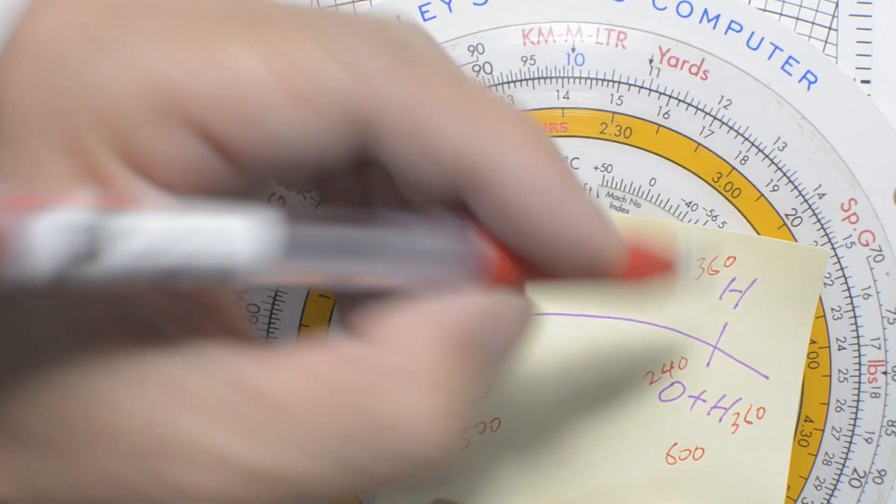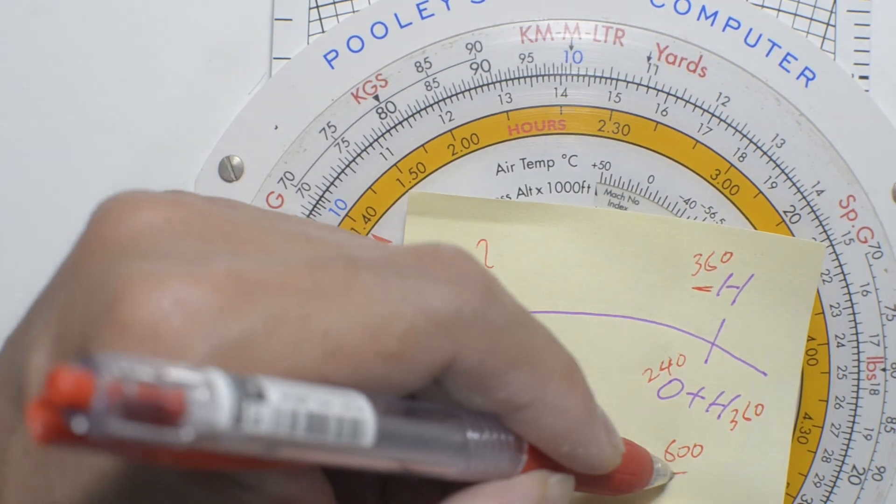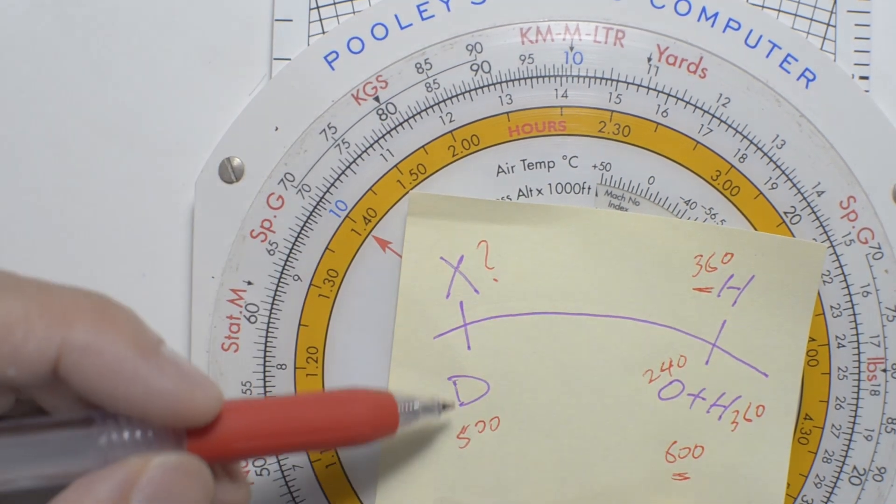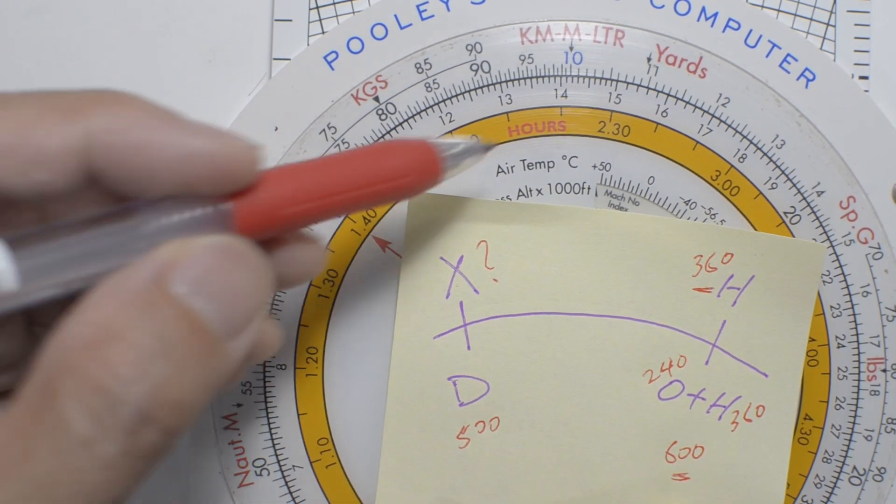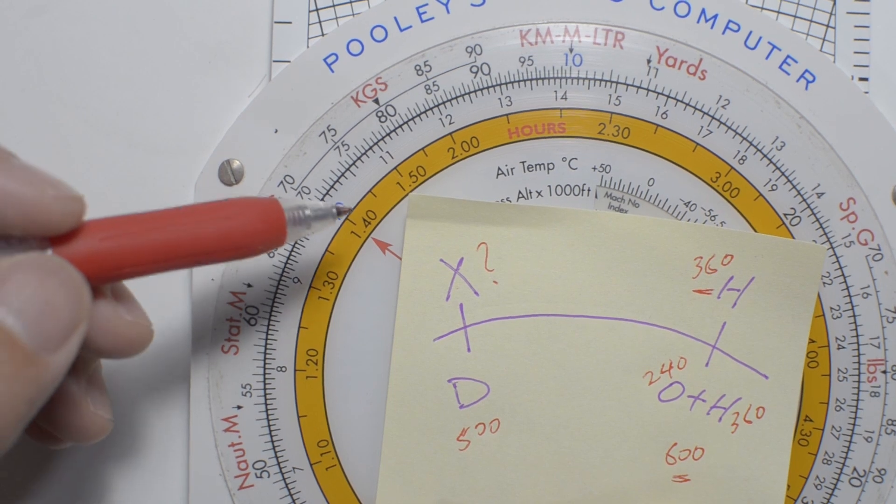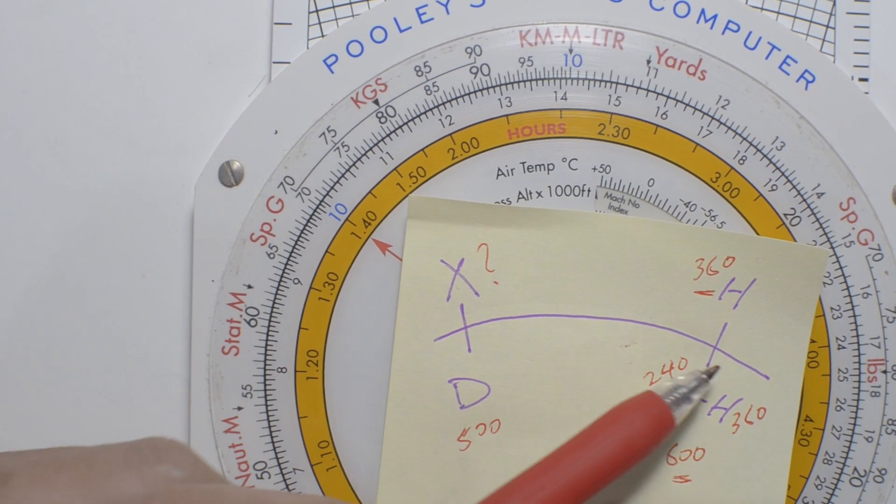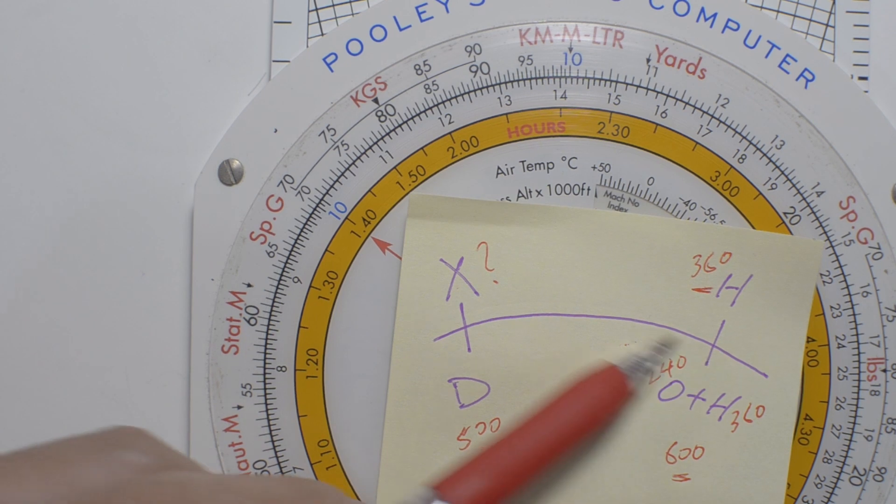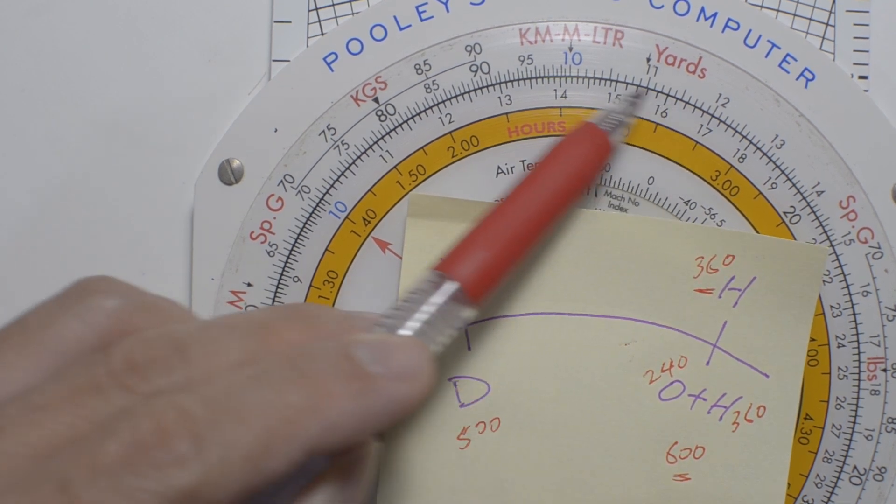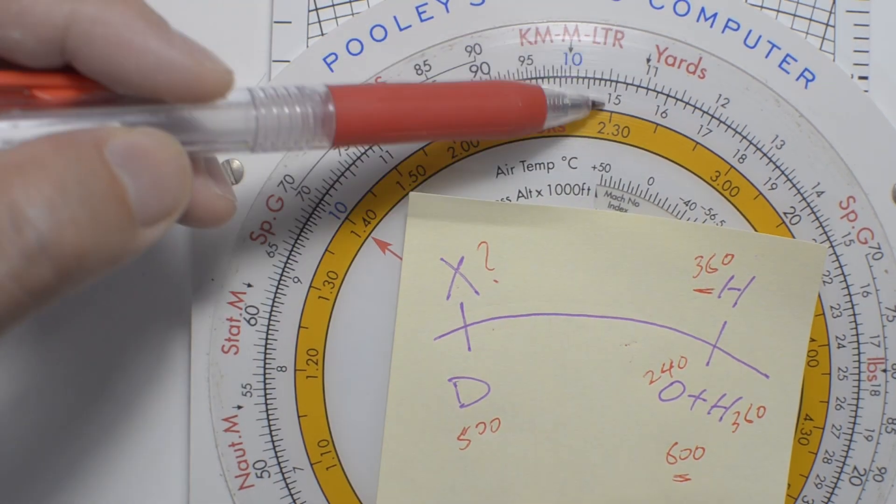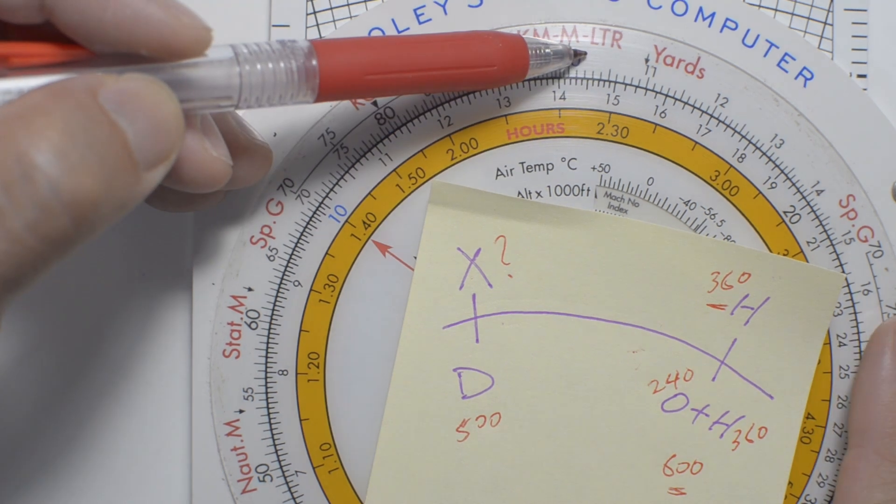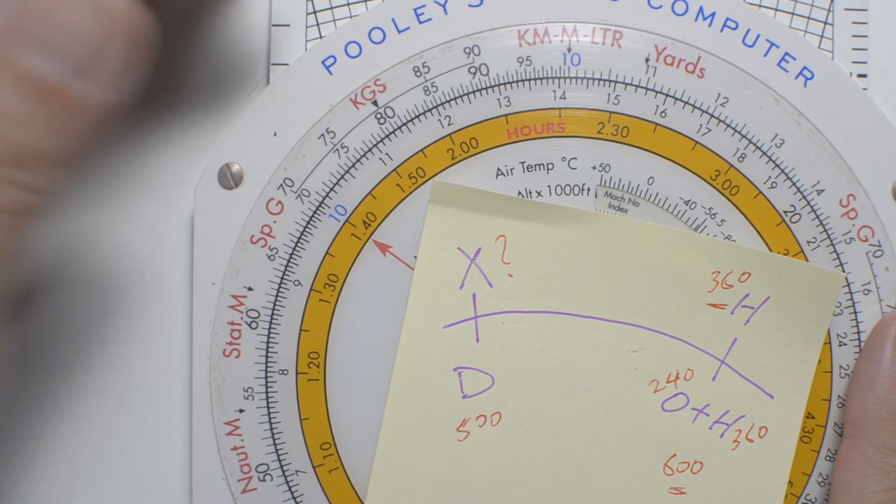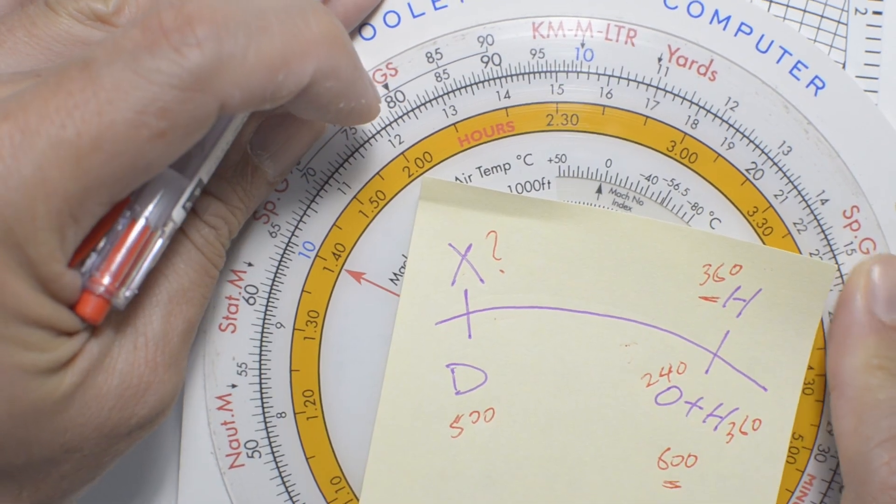What we're going to do is we're going to line up the two known values, and then we will find the unknown value using this table. How we use this schematic is this line represents the dividing line between the inner and outer scale. The outer scale is fixed and doesn't move. The inner scale can be rotated.